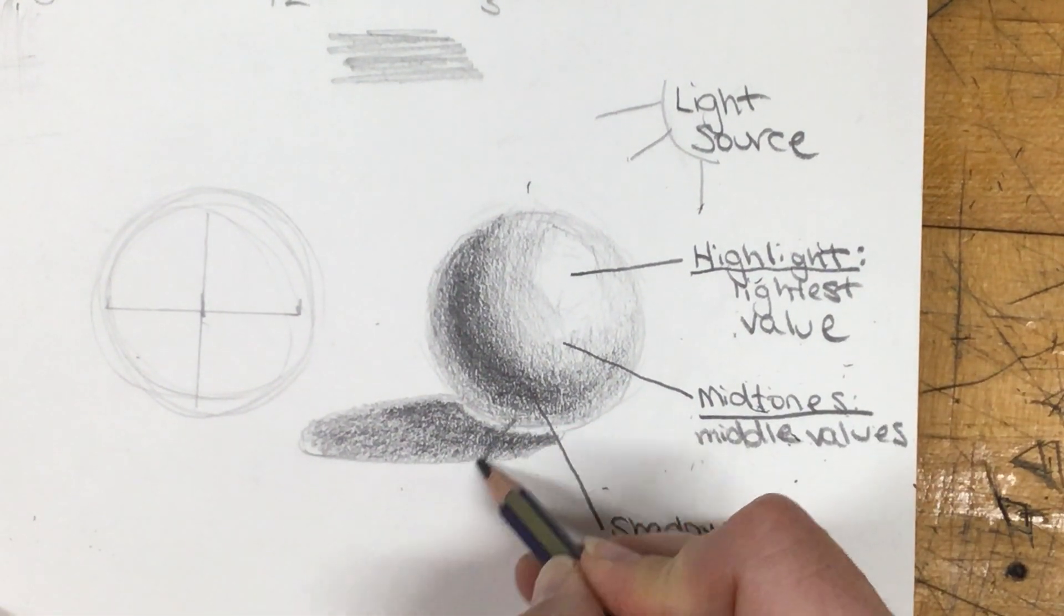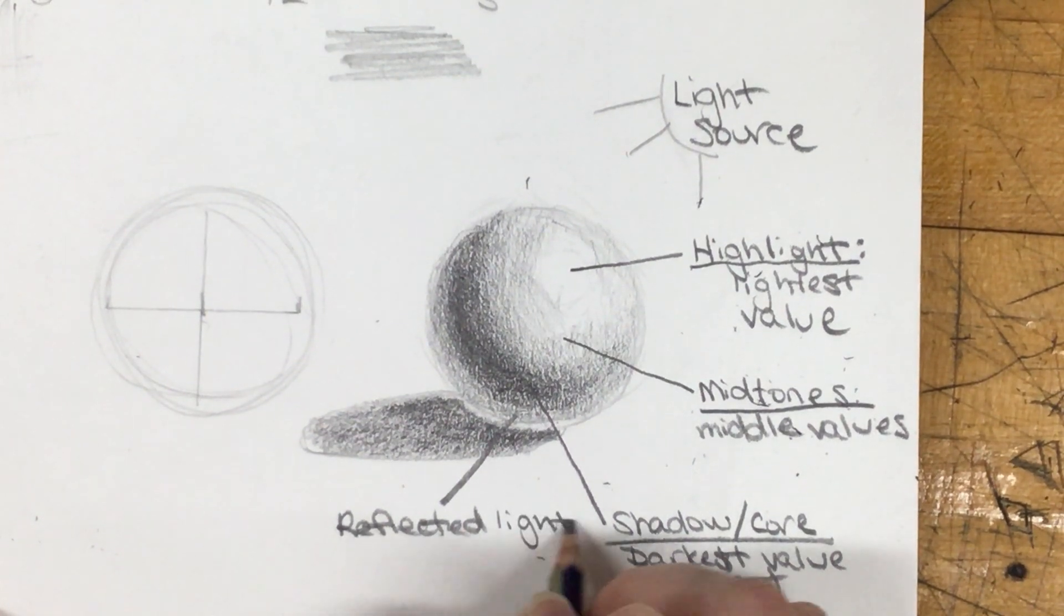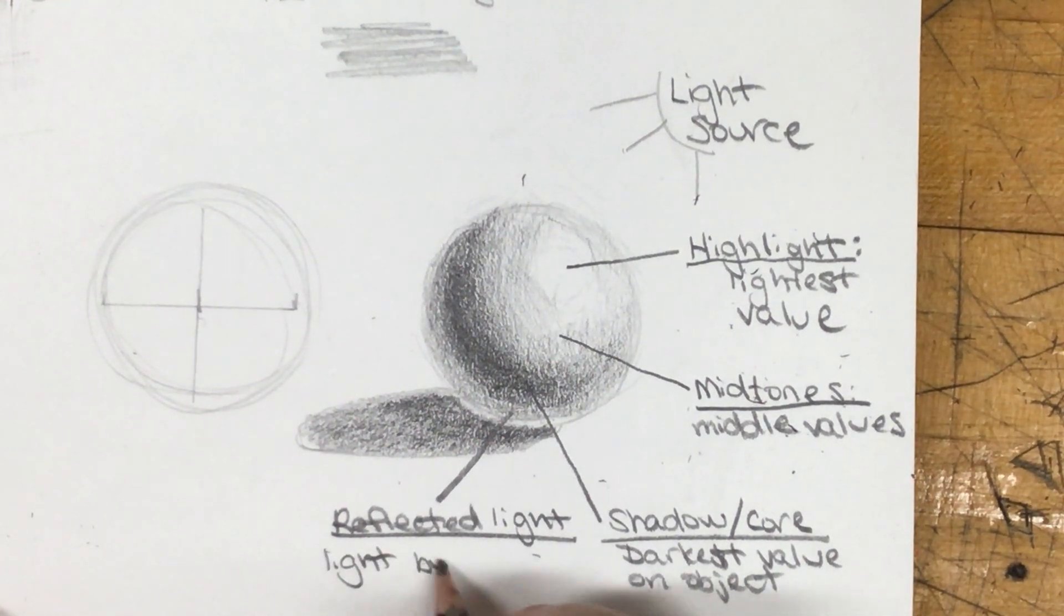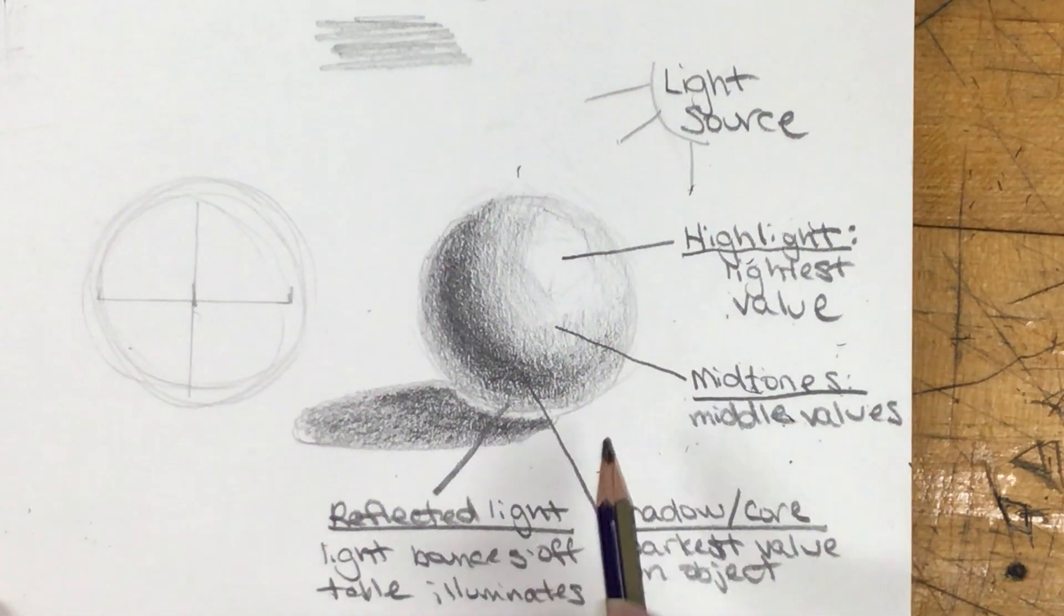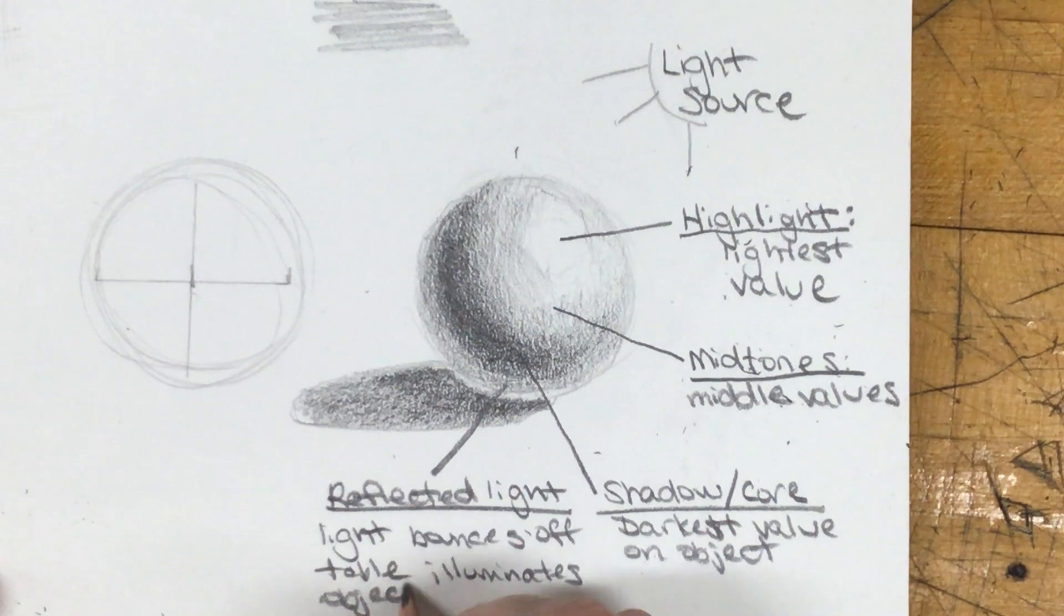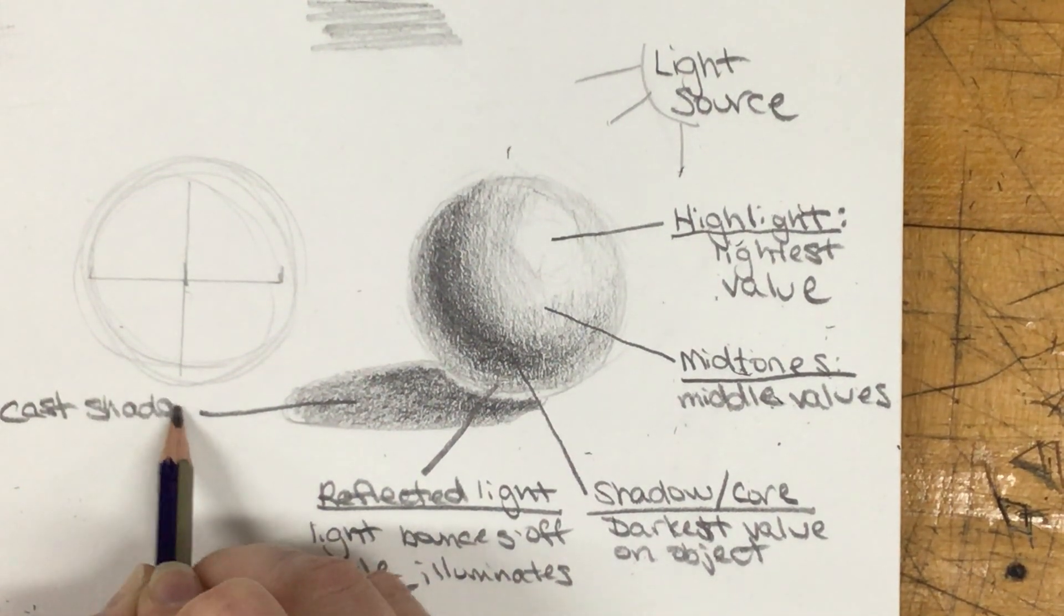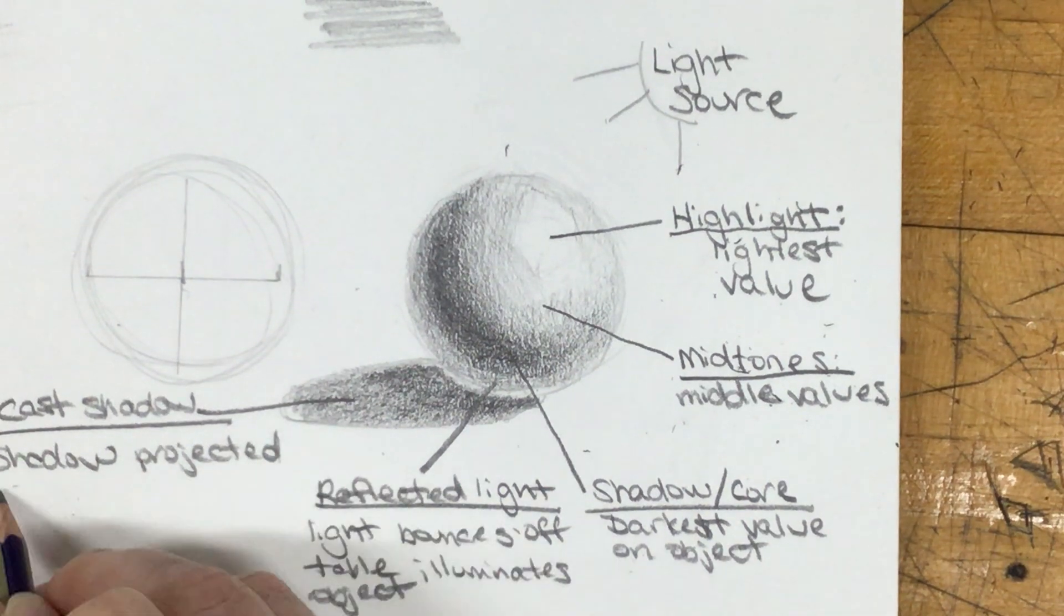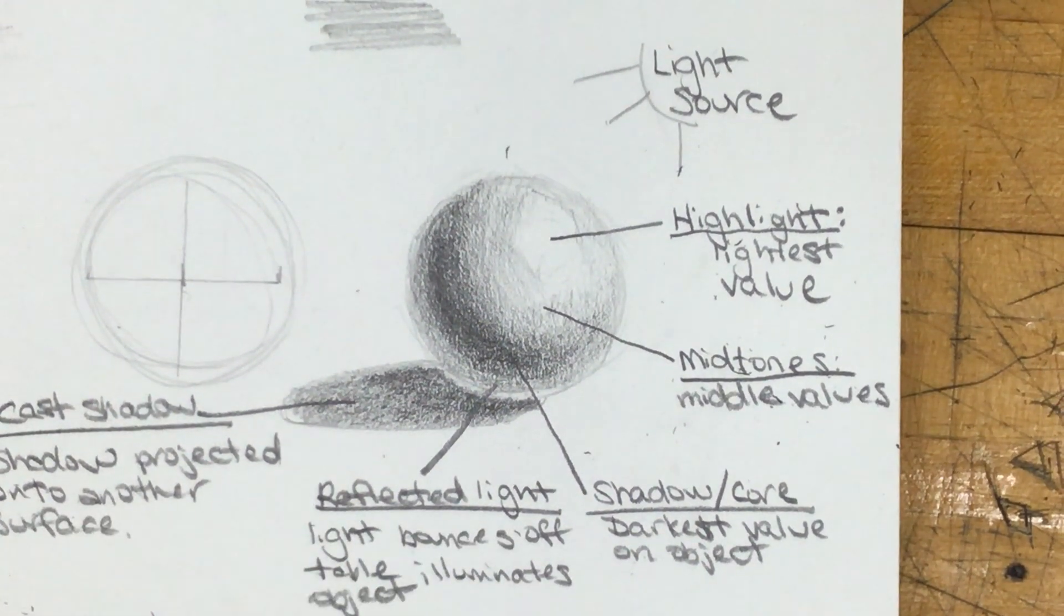So you're going to have a nice range from really light to really dark. And then underneath the shadow, we have our reflected light. Your reflected light is where light bounces off of the table and then it illuminates the underside of your object. And then the last part here is your cast shadow. So that's your shadow that is projected onto another surface.